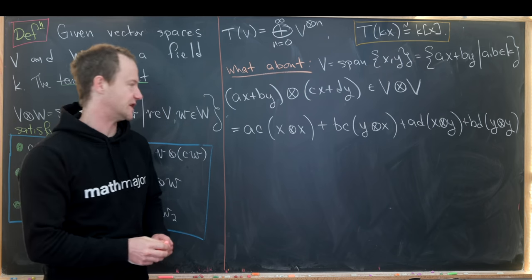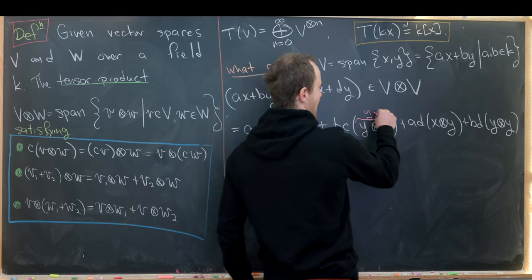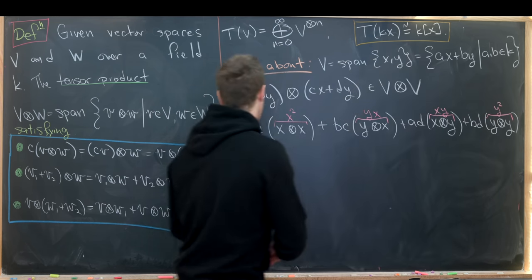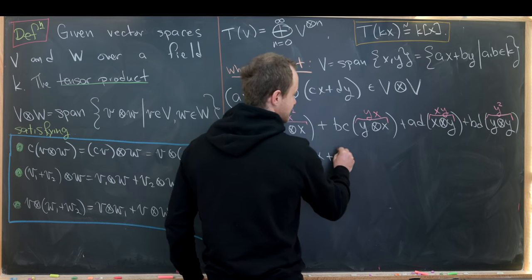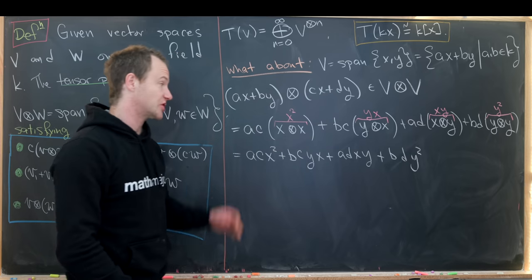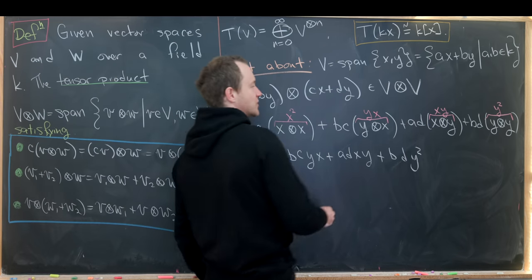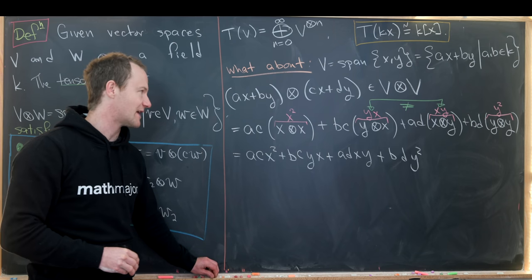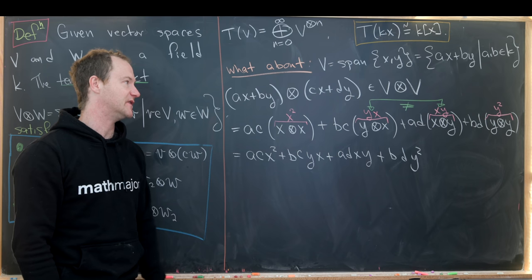Introducing simplified notation — writing X⊗X as X², Y⊗X as YX, X⊗Y as XY, and Y⊗Y as Y² — we can rewrite this as ACX² + BCYX + ADXY + BDY². But that's all we can do; there is no further simplification. Built into the tensor product, there's no reason for XY to equal YX — in fact, they are not equal. So we don't have a polynomial algebra in this case, because a polynomial algebra requires commutativity among the variables.